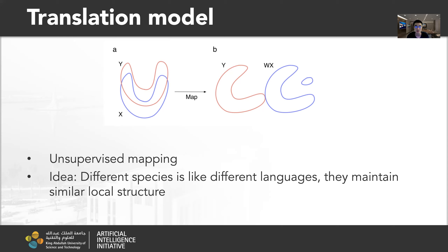The idea is similar to language: we treat different species as different languages. Different species are likely to maintain similar local structures, which is very similar to how languages relate to each other.